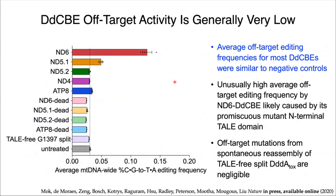As with any genome editing tool, it is important to assess the off-target activity of the editor. We used ATTAC-seq to sequence the entire mitochondrial genome with an average coverage of up to 9000X per base. We found that one variant of DdCBE showed unusually high levels of off-target editing, which was not surprising because its N-terminal domain was previously known to bind DNA promiscuously. For the remaining DdCBEs tested, we generally observed background levels of off-target editing comparable to the dead editor controls. In particular, we did not observe any off-target editing for the TALE-free DddA split, suggesting that DddA is unlikely to spontaneously reassemble in the absence of a DNA template.